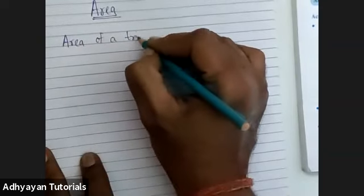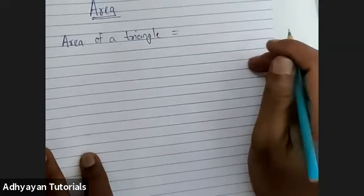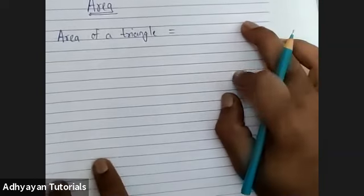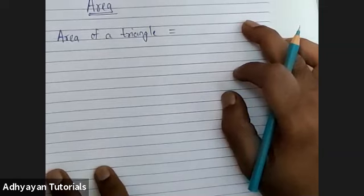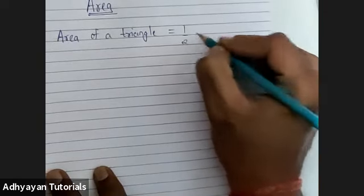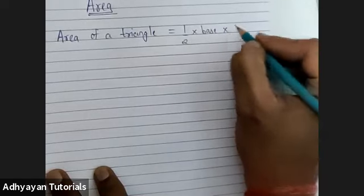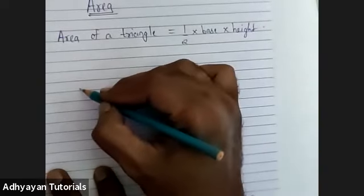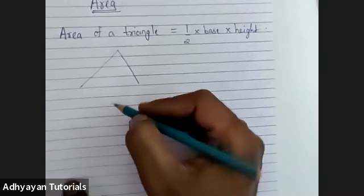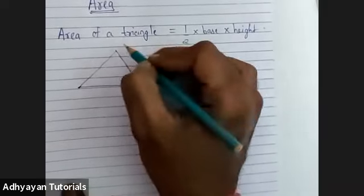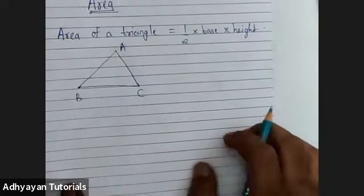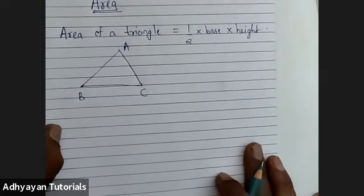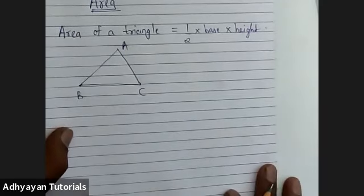For example, area of a triangle — I believe everybody must be knowing what is the area of a triangle. Can anybody help me here? Half into base into height — that is absolutely correct, Omkar. So it is half into base into height. If I draw a triangle, Omkar, can you help me here — which side can be the base of this triangle? In fact, not only Omkar, any child can answer this question.